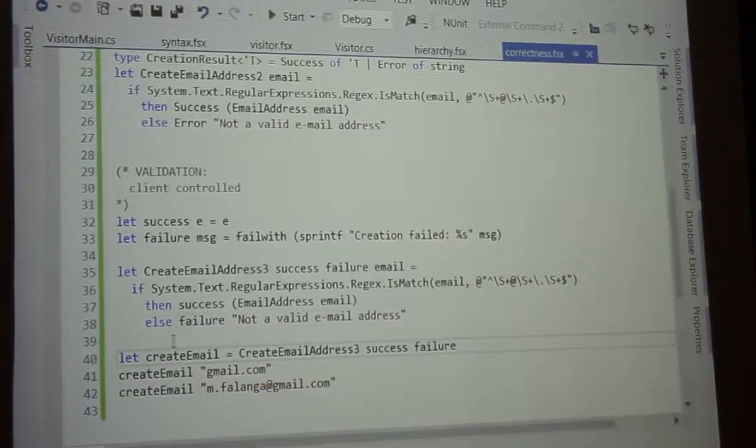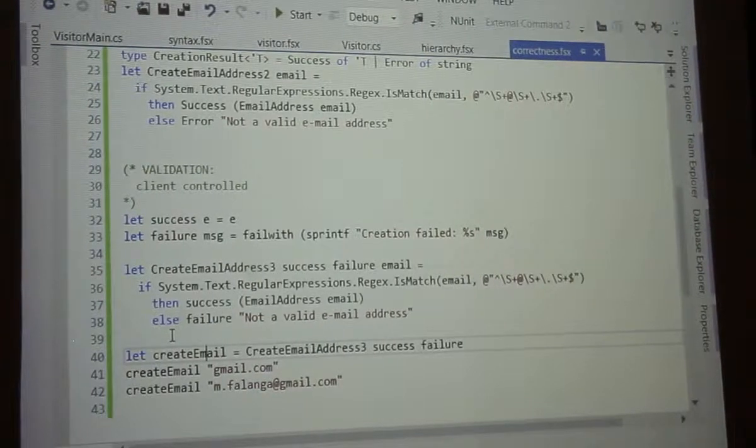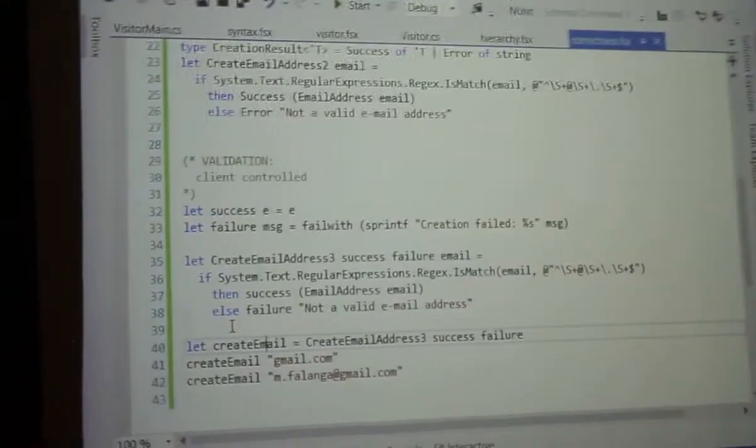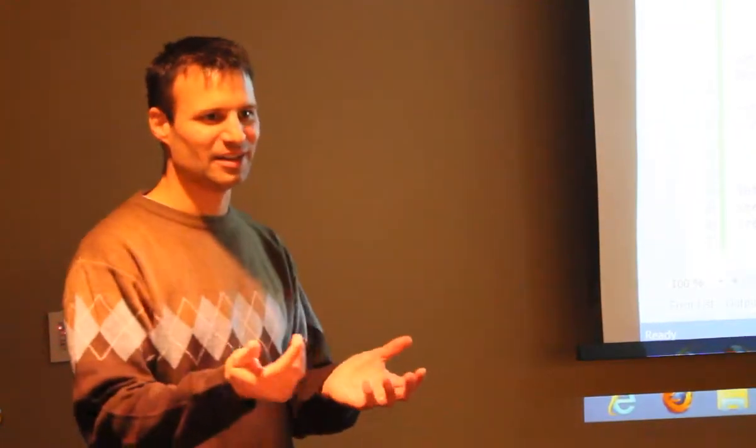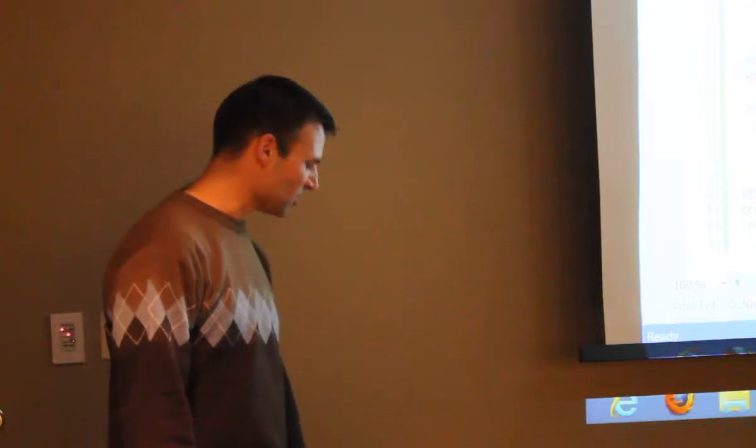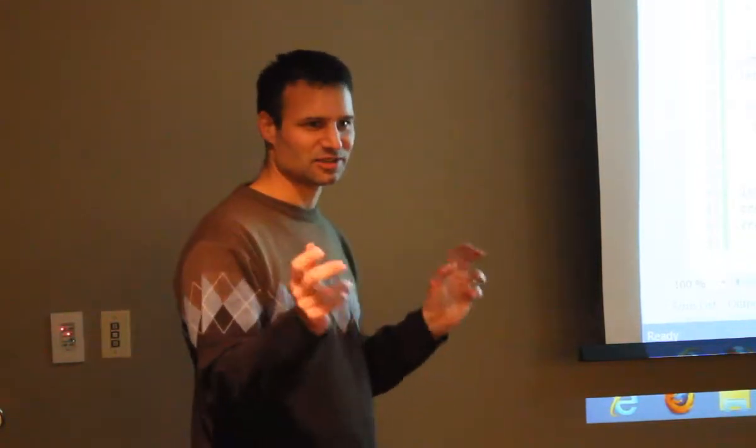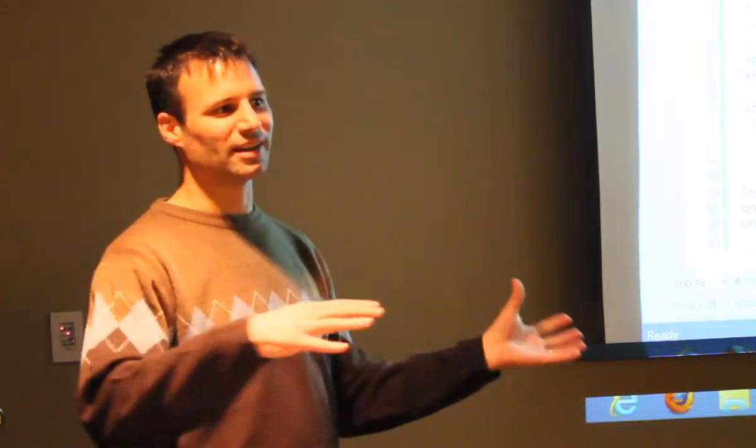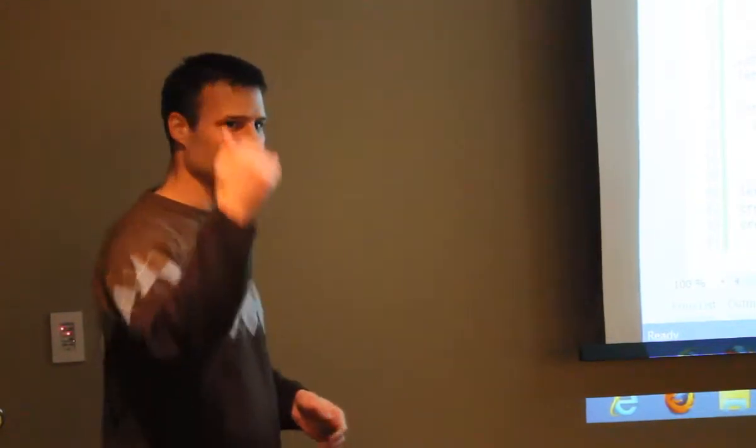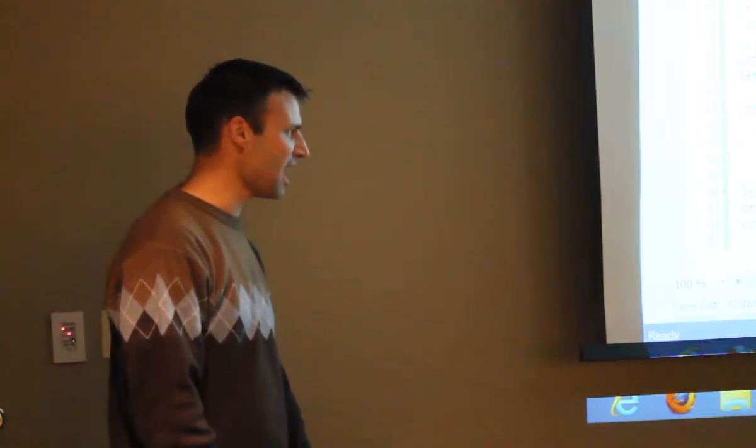And here's how we might use this, and what I showed here is partial function application, right? So if you have various places in your code where you're creating email addresses, and you always want to do the same success and failure method, it would really kind of suck to have to pass that in all those places, right? So you can do what's called partial application, and you can create a new function, basically seeding our creating email address with our standard success and failure methods. But if any one case in your application needed to override that, it still could by calling the original function. And so we can call it like this, right? So this one would be bad, and that would be good.